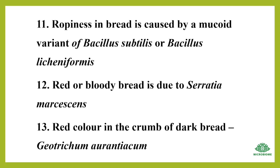Ropiness in bread is caused by a mucoid variant of Bacillus subtilis or Bacillus licheniformis. Red or bloody bread is due to Serratia marcescens. Red color in the crumb of dark bread is due to Geotrichum aurantiacum.